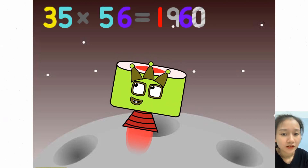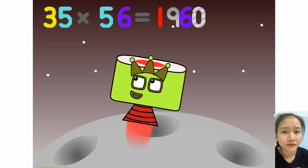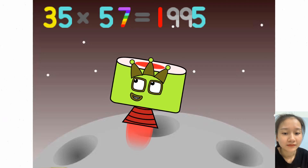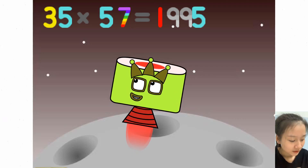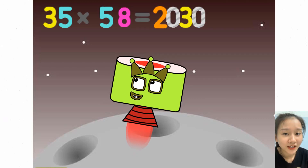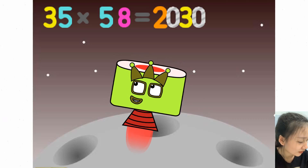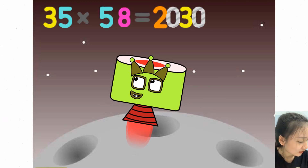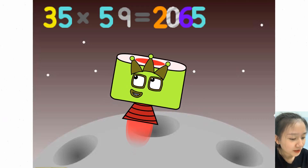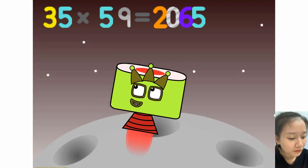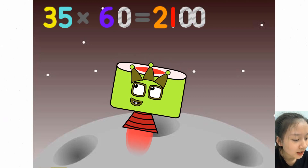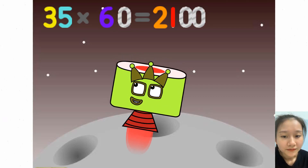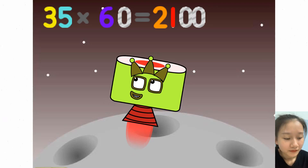35 x 56 equals 1960. 35 x 57 equals 1995. 35 x 58 equals 2030. 35 x 59 equals 2065. 35 x 60 equals 2100.